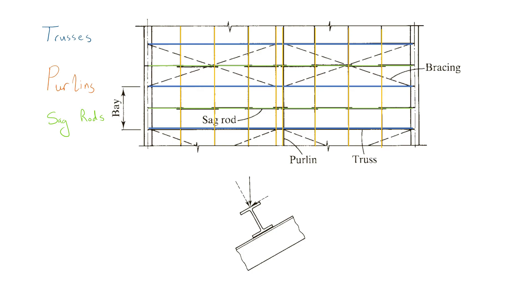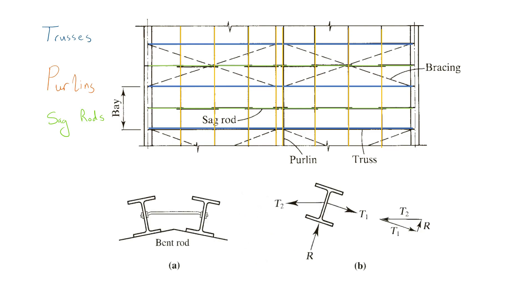Sometimes however, the weight of the purlin itself is enough to cause problems and sag rods may be needed to provide support during construction before the deck is in place. If sag rods are used, they are designed to support the component of roof loads parallel to the roof.